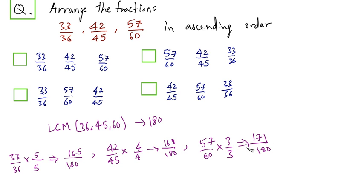So out of these, the largest one is 57 by 60. Then the second largest one is 42 by 45 and then the smallest one is 33 by 36. So this will come first, this will come second and this will come third. This is the correct answer, option A.